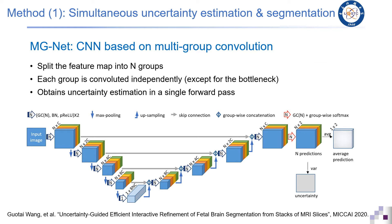Here is our MGNet for uncertainty estimation. It is based on the UNet backbone, and we split the feature maps into N groups. Each group is convolved independently, so the network can be considered as N parallel subnetworks. It obtains N predictions, and we take the variance of these N predictions as the uncertainty. The advantage is that it can obtain the uncertainty in a single forward pass, which is more efficient than existing methods such as Monte Carlo dropout and model ensemble.